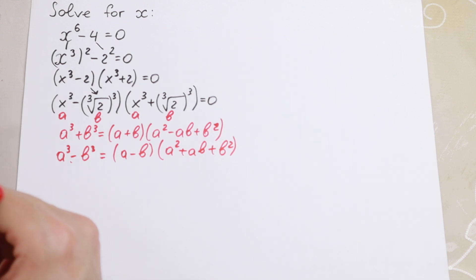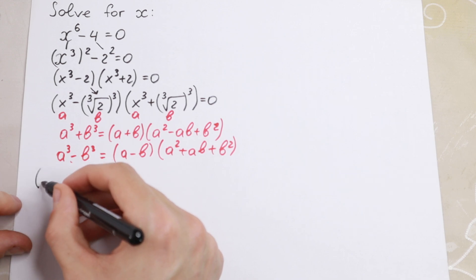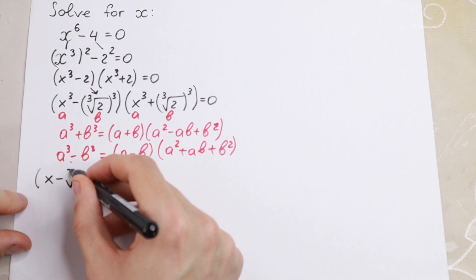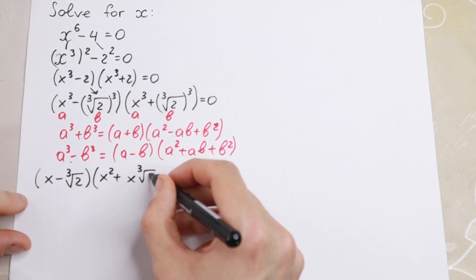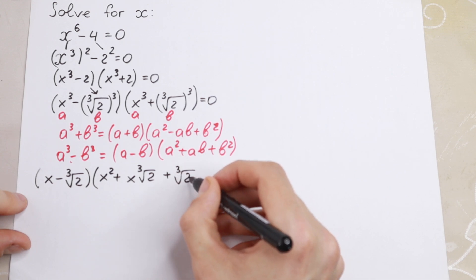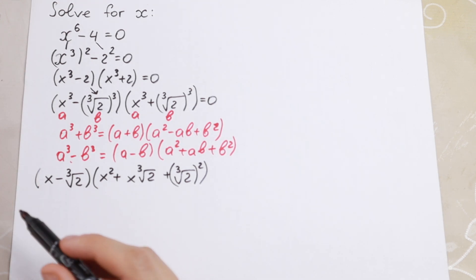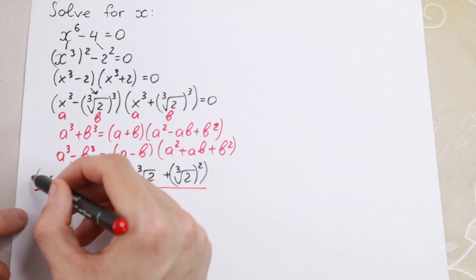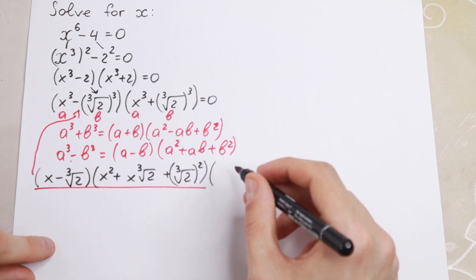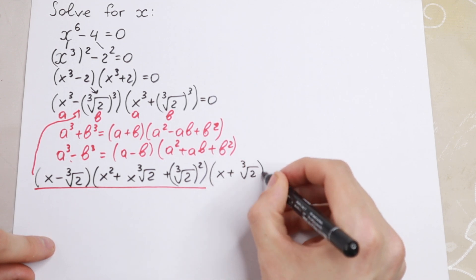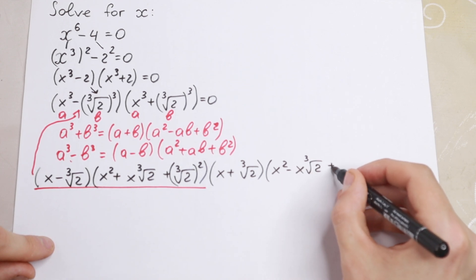So let's write this long expression. For the difference of cubes we will have x minus cube root of 2, times x squared plus x times cube root of 2 plus cube root of 2 to the second power. Multiplying by the sum of cubes: x plus cube root of 2, times x squared minus x times cube root of 2 plus cube root of 2.